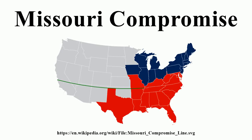This change was viewed by free soilers and many abolitionist northerners as an aggressive, expansionist maneuver by the slave-owning South, and led to the creation of the Republican Party. Although already superseded by the Kansas-Nebraska Act, the Supreme Court indicated that the Missouri Compromise was unconstitutional in the 1857 Dred Scott v. Sandford ruling.